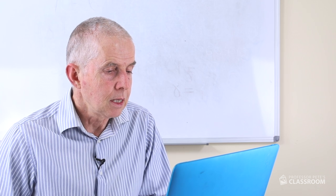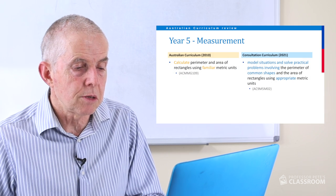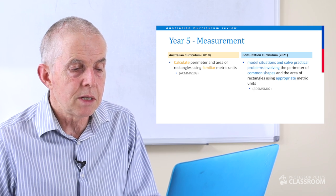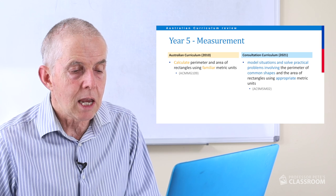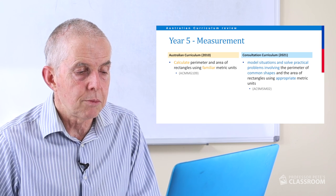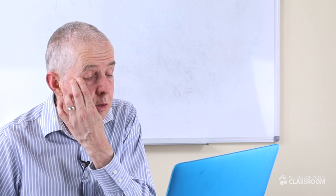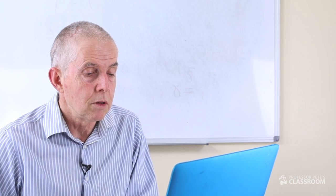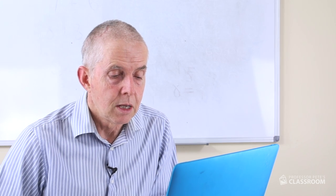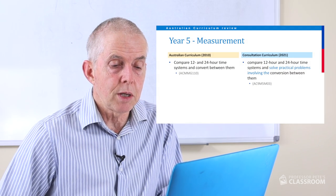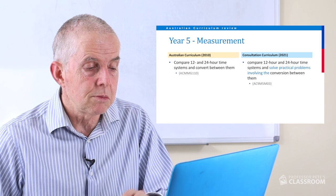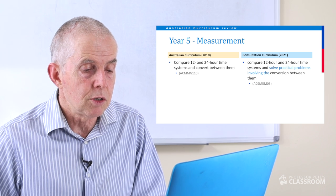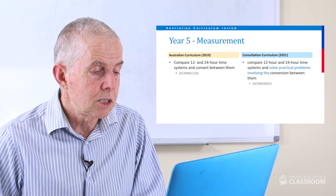The second measurement content descriptor says: model situations and solve practical problems involving the perimeter of common shapes and the area of rectangles using appropriate metric units. Almost the same as the one previously — slightly more language, slightly more clarity. Number three: compare 12-hour and 24-hour time systems — same as the old one — and solve practical problems involving the conversion between them. Almost unchanged, well done.